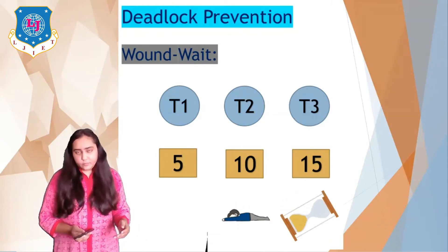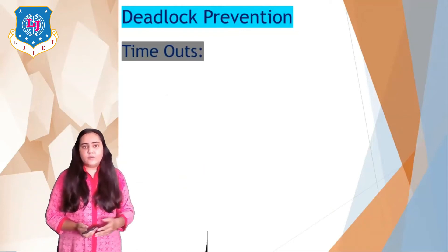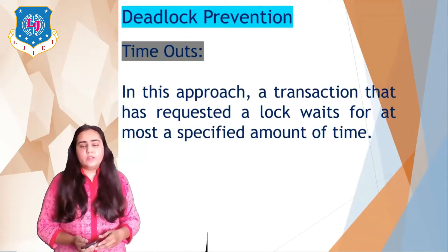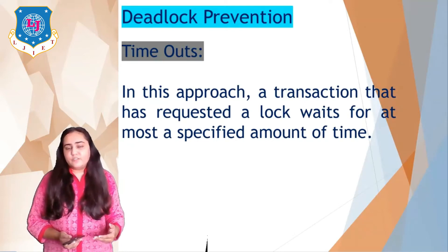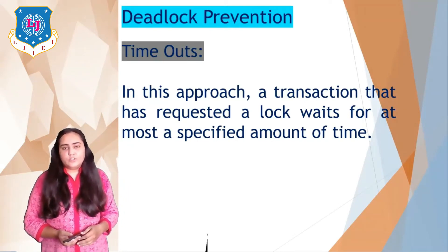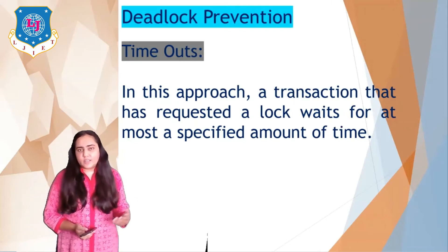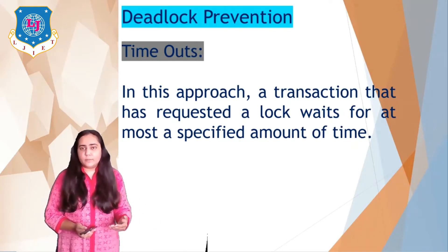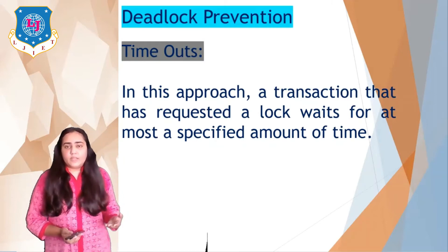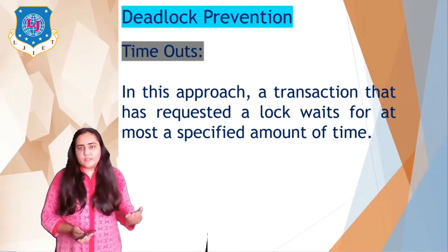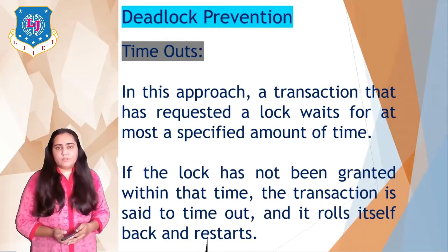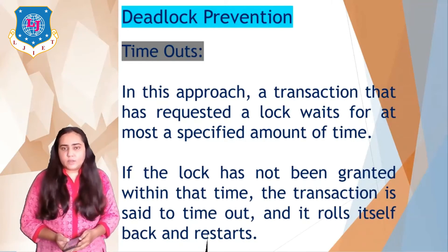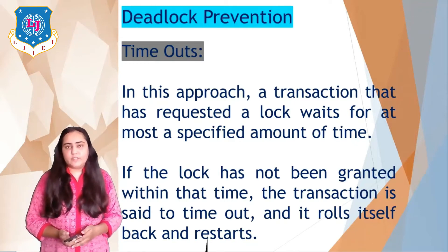The last deadlock prevention technique is timeouts. In timeouts, a transaction that has requested a lock waits for at most a specified amount of time. If the specified time is say 10 seconds and after 10 seconds it still does not receive the data item, the transaction stops executing and releases all the locks it currently holds. If the lock has not been granted within that time, the transaction times out, rolls itself back, and restarts. This also prevents deadlocks.